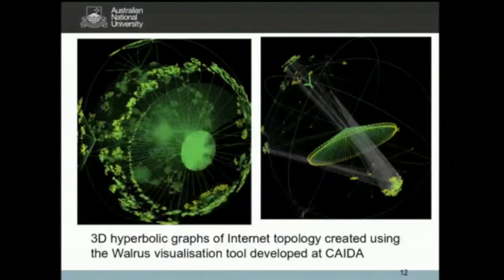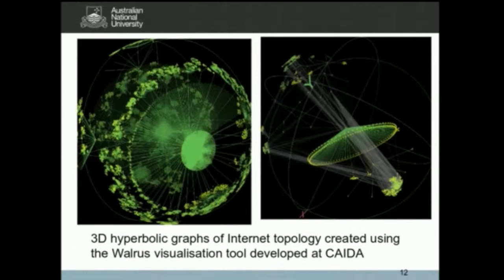I came across a visualisation of the architecture of the internet using hyperbolic space — hyperbolic geometry — rather than normal Euclidean space. It's a way of representing large-scale and complex networks in an uncluttered way. It was a spinning globe where you could zoom in on particular nodes and zoom out. I thought that was the type of thing I wanted to be doing for my research studying hyperlink networks.